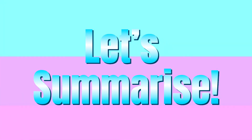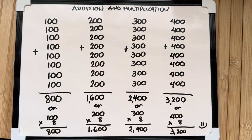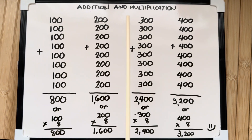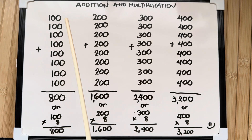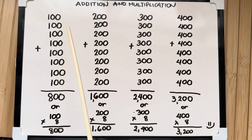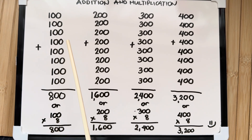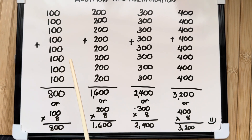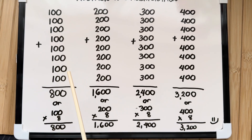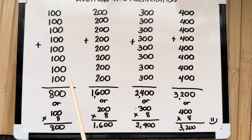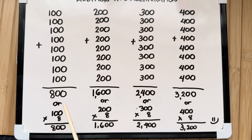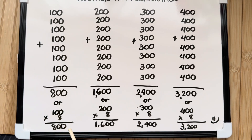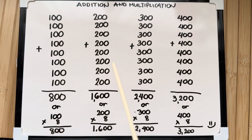Let's summarize. Join me and let's learn addition and multiplication. Let's start. 100 plus 100 plus 100 plus 100 plus 100 plus 100 plus 100 plus 100 is equals to 800, or 100 times 8 is equals to 800.